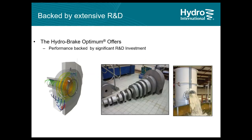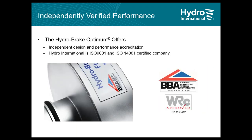The HydroBrake Optimum is a well-researched product with over 600 days of lab tests and 10 years of computer processing time to run CFD models. It has been installed and in operation at thousands of sites around the world. The design and performance has been independently assessed, and the HydroBrake Optimum is BBA and WRc approved. This independent certification is crucial to assure customers that the product will perform as claimed — not all flow control devices have such certifications, so this is an important selection factor.